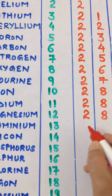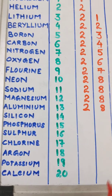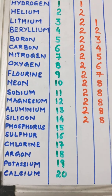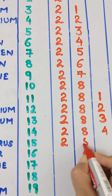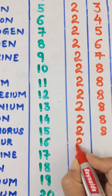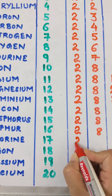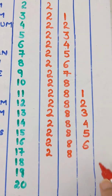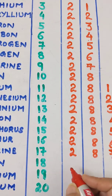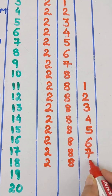Aluminium has an atomic number of 13: 2 in K, 8 in L, 3 in M. Silicon, atomic number 14: configuration 2, 8, 4. Phosphorus: 2, 8, 5 with 15 electrons. Sulphur: 2, 8, 6. Chlorine has 17 electrons: 2 in K, 8 in L, 7 in M. Argon has atomic number 18: 2 in K, 8 in L, and 8 in M shell.